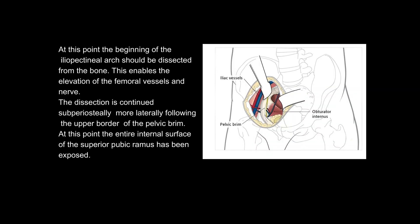At this point, the beginning of the iliopectineal arch should be dissected from the bone. This enables the elevation of the femoral vessels and nerve. The dissection is continued subperiosteally more laterally, following the upper border of the pelvic brim. At this point, the entire internal surface of the superior pubic ramus has been exposed.